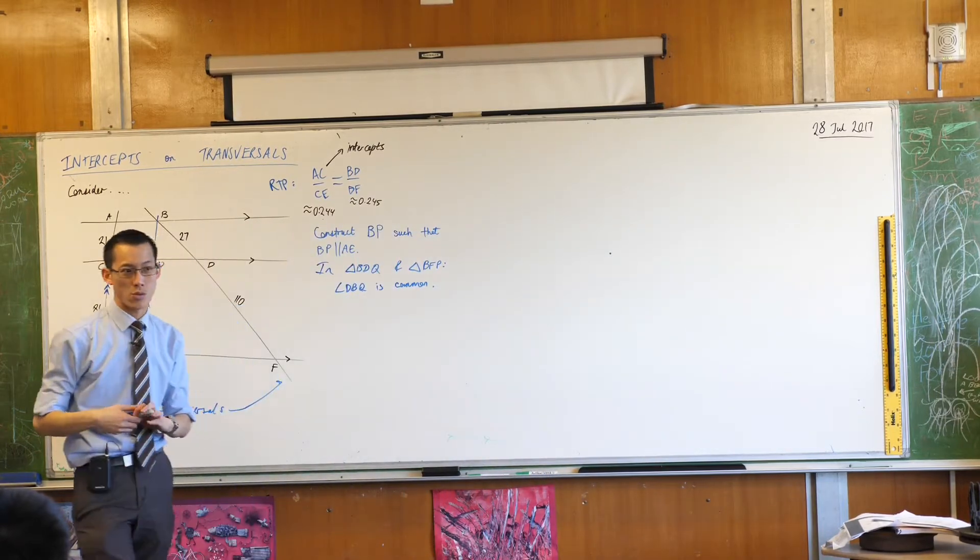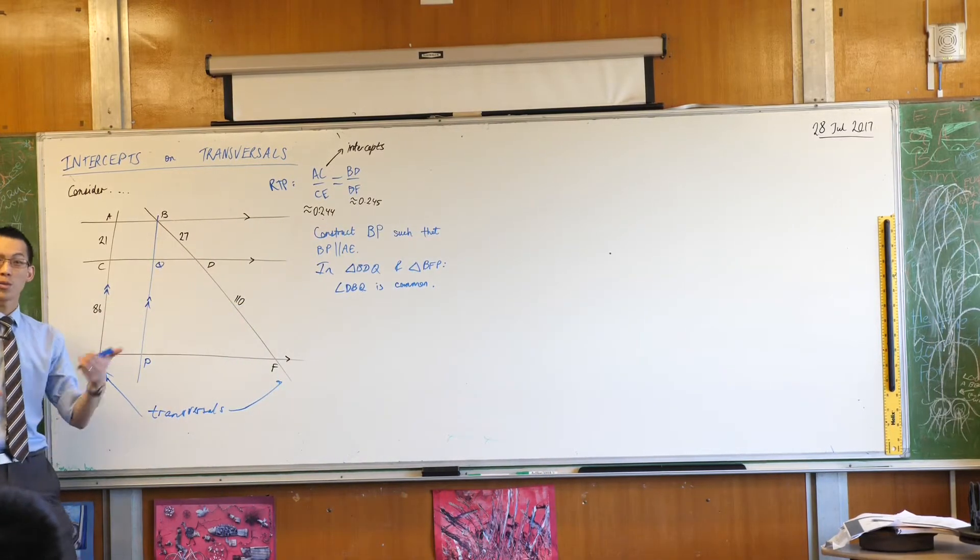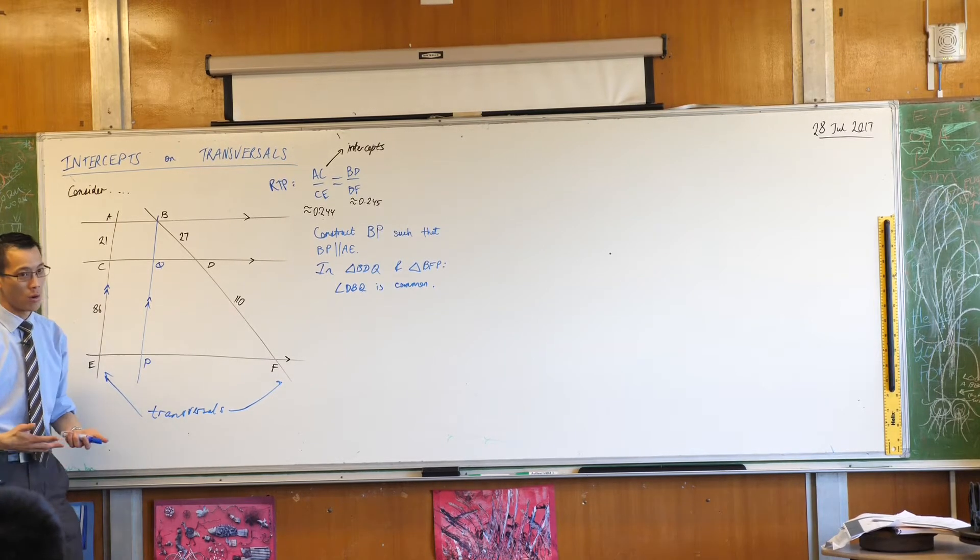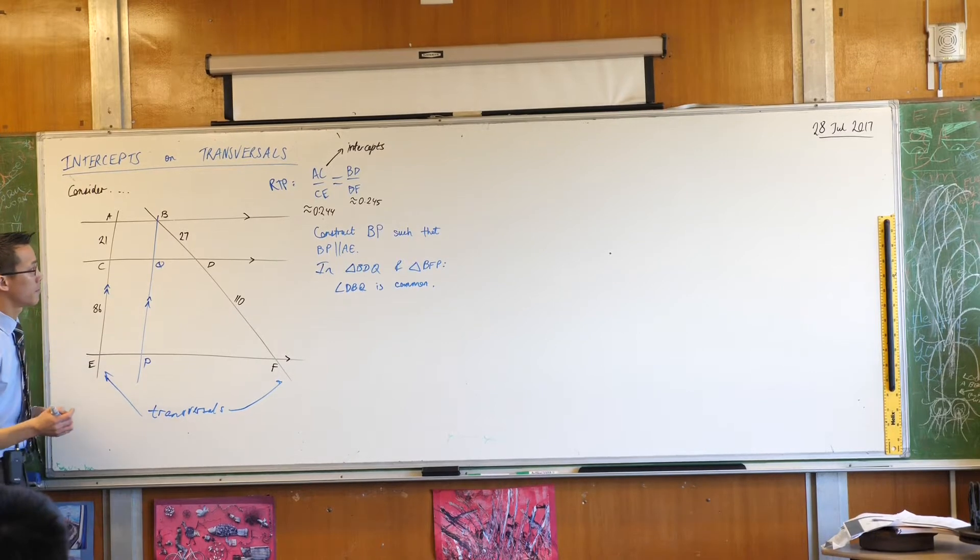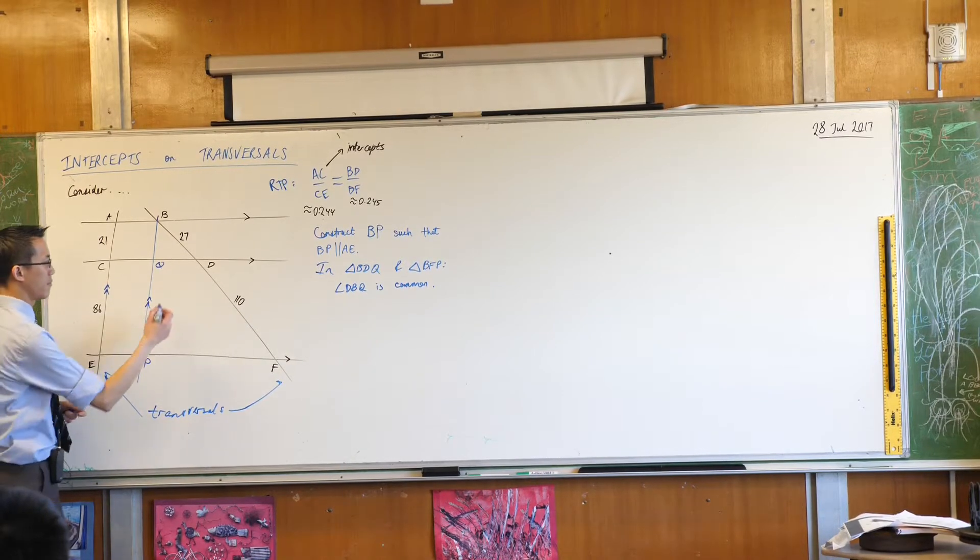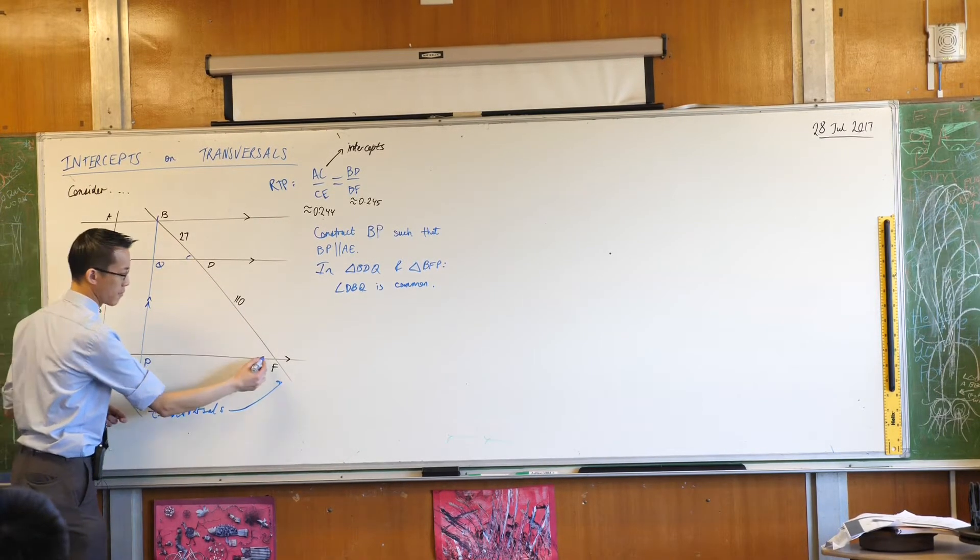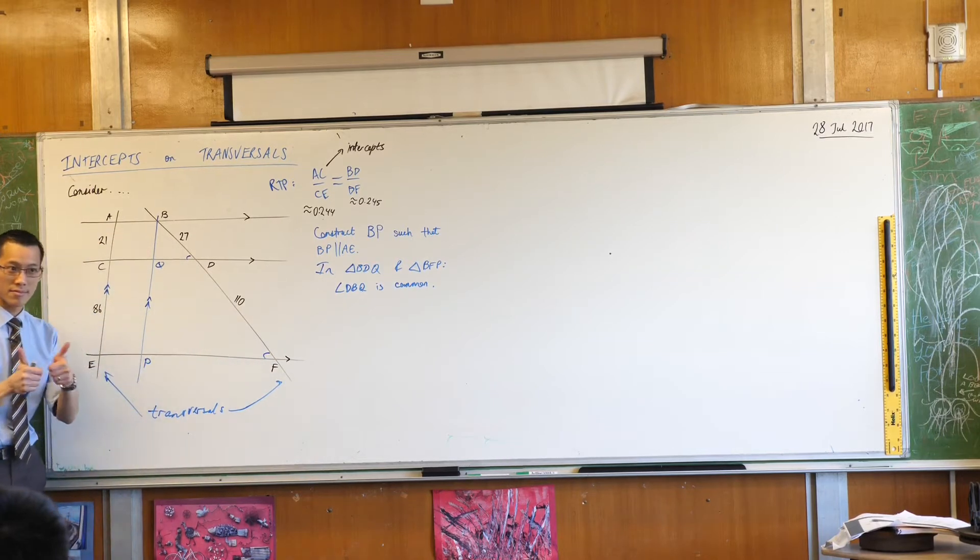Now in order to get towards equiangular I only need two angles and I've already got one. So what would you like to choose as the other one? Yeah, go ahead Nick. B, Q and A, F, Q because corresponding angles equal on parallel lines. Wonderful.